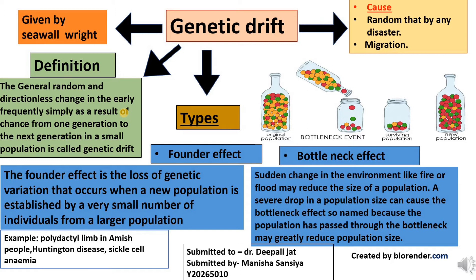Another example is a bird having an allele for two different sizes of beaks. Genetic drift might eliminate one of the beak sizes from the population, thus reducing the genetic variation of the gene pool of the bird.